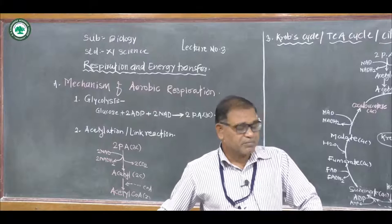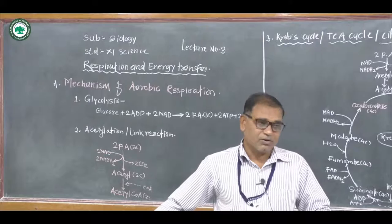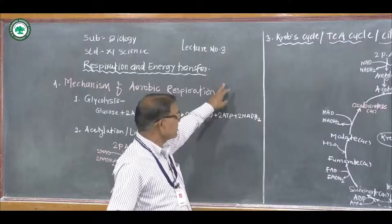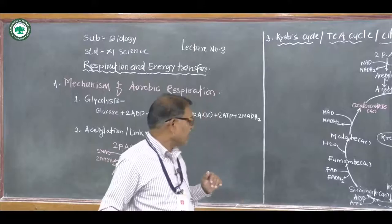Aerobic respiration takes place in the presence of molecular oxygen. Aerobic respiration takes place in three main steps: first step, glycolysis; second step, Krebs cycle; and third step, electron transport system.